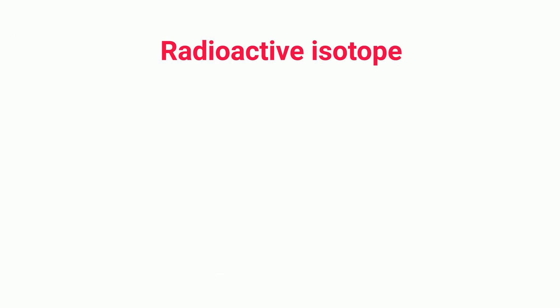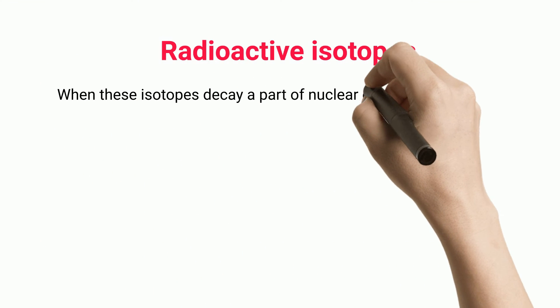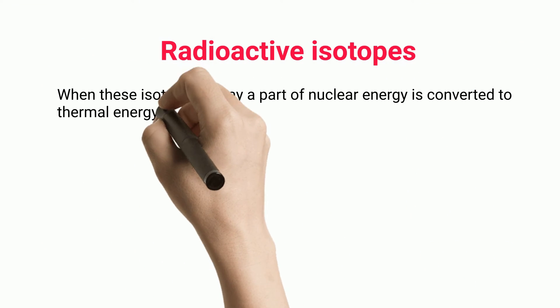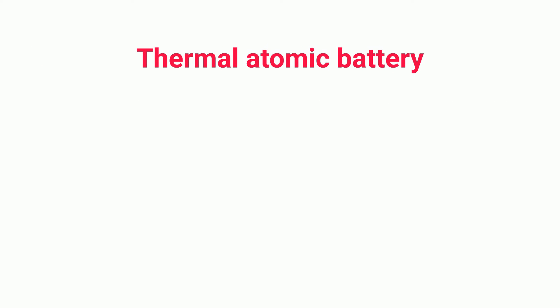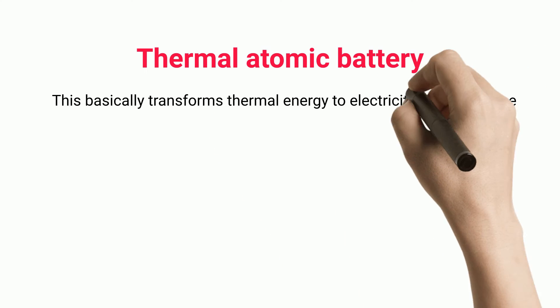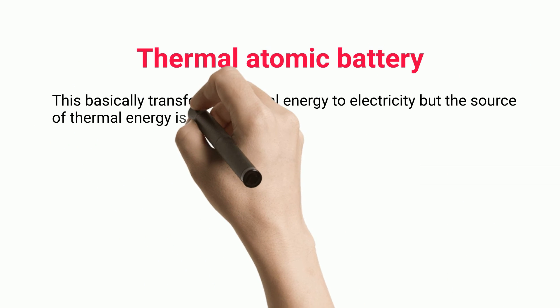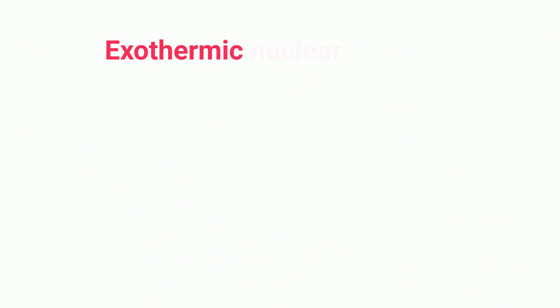Radioactive isotopes: when these isotopes decay, a part of nuclear energy is converted to thermal energy. A thermal atomic battery basically transforms thermal energy into electricity, but the source of that thermal energy is nuclear energy.